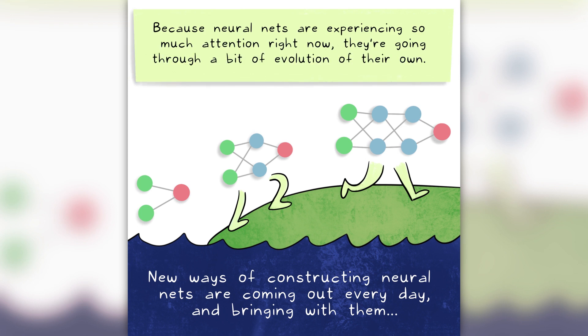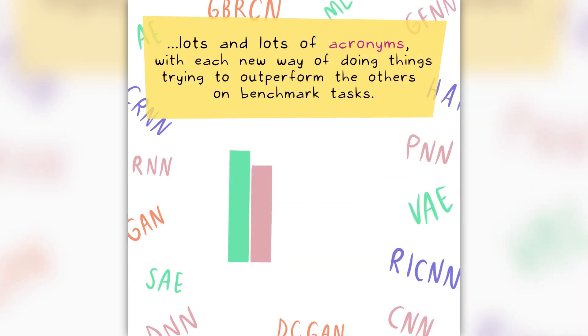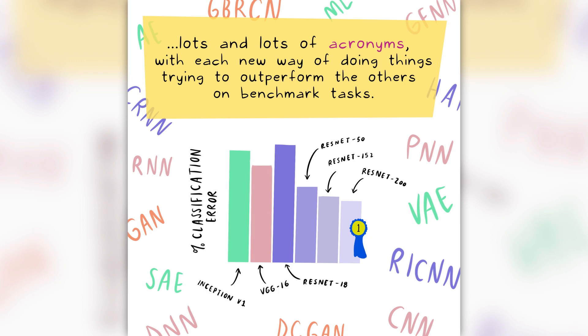Because neural nets are experiencing so much attention right now, they're going through a bit of evolution of their own. New ways of constructing neural nets are coming out every day and bringing with them lots and lots of acronyms, with each new way of doing things trying to outperform the others on benchmark tasks.